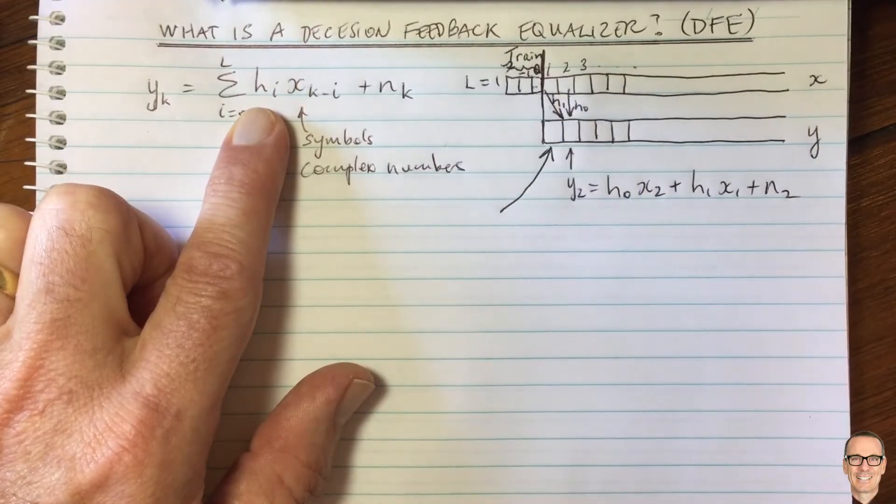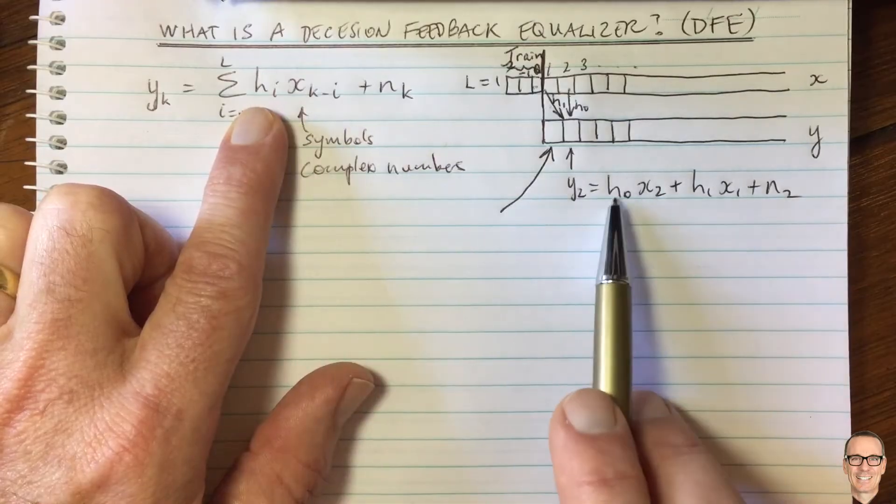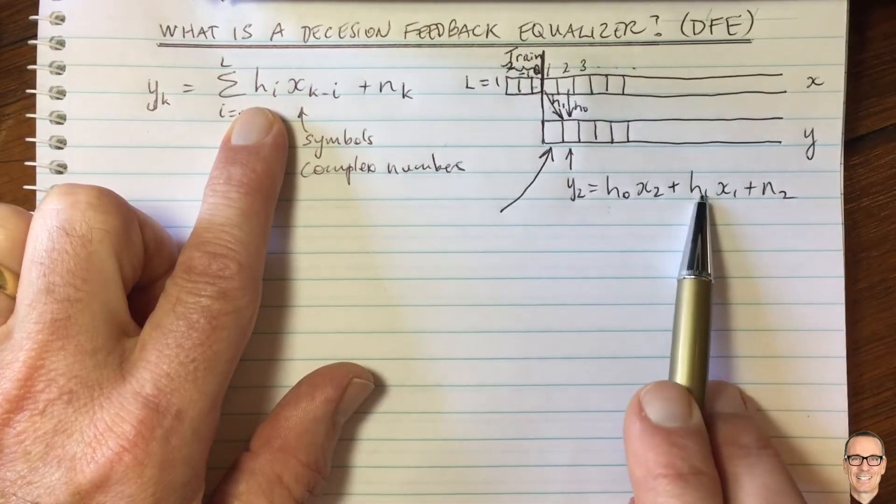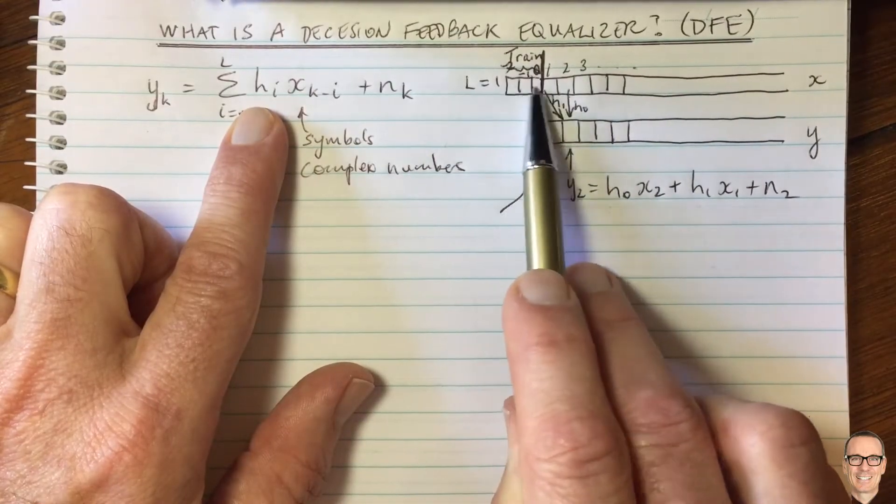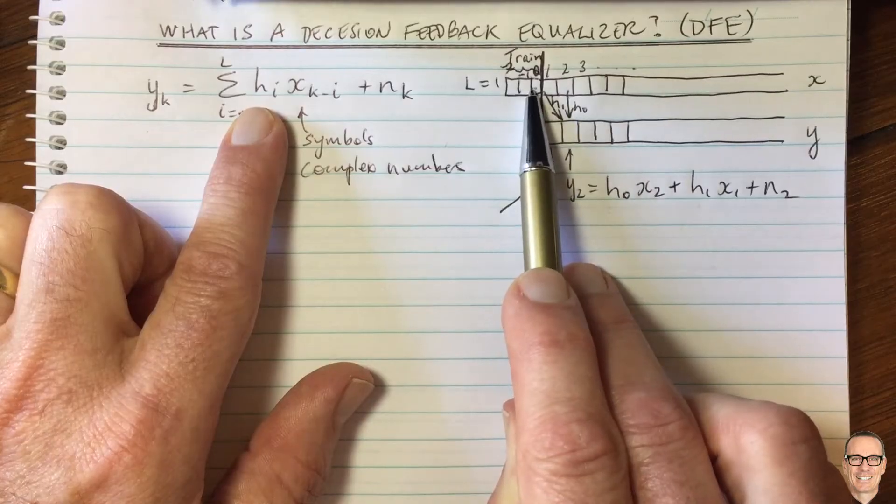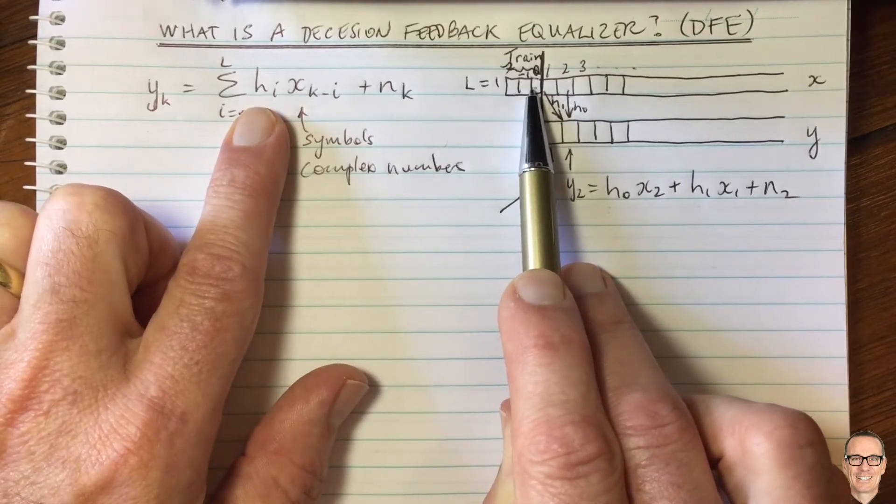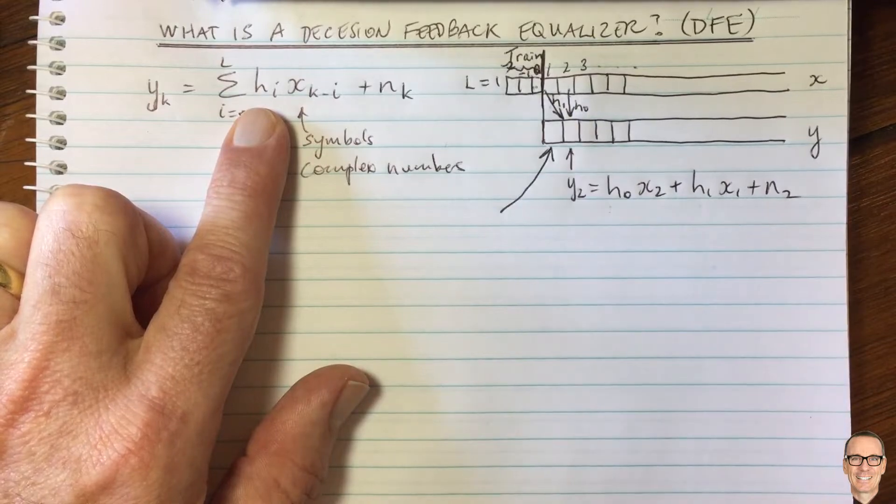Now one thing that you're going to use the training for, of course, is to estimate the values of h. So to estimate h naught and h1, you send training. So this is always here in communication systems where you don't know the channel, such as wireless communications.